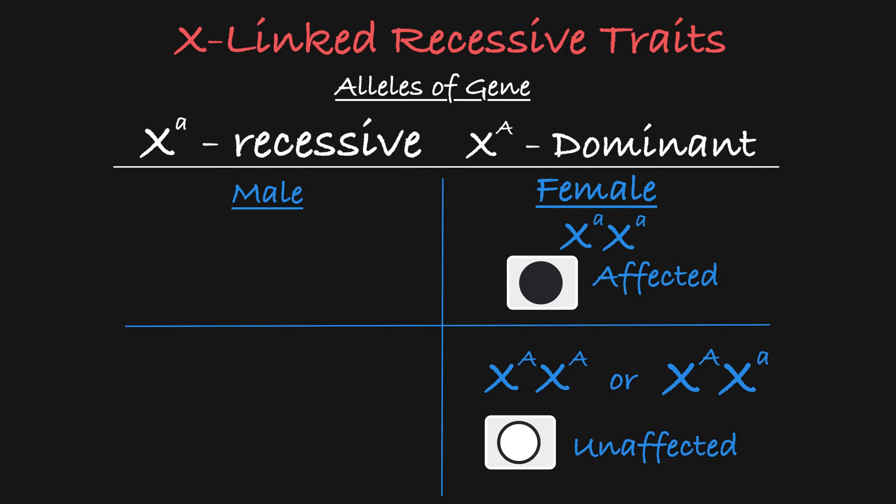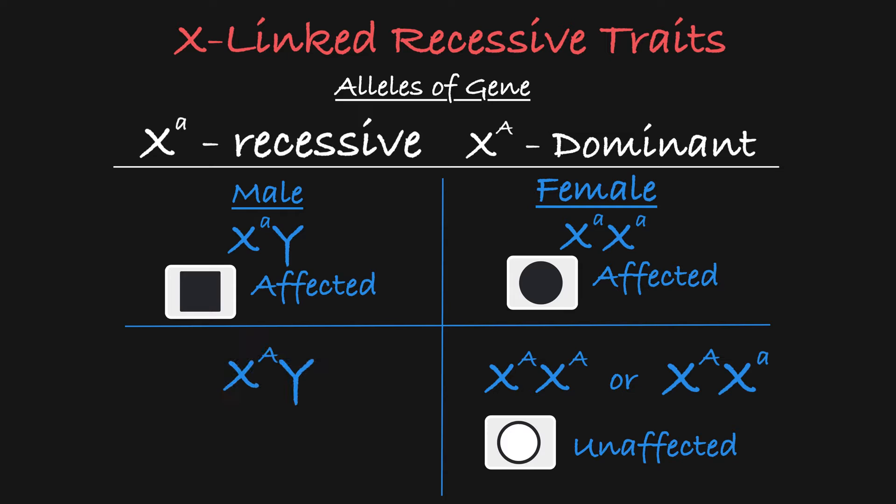For males, the phenotype is dictated by the single X-allele they have. In the case of an X-linked recessive disorder, a male with the recessive X-allele will be affected, while a male with the dominant X-allele will be unaffected.